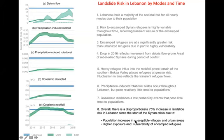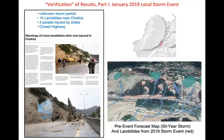Overall what we found is that there is a disproportionate 75% increase in landslide risk in Lebanon since the start of the Syrian crisis. That has everything to do with the population increase, but also higher vulnerability and exposure of those in informal settlements.